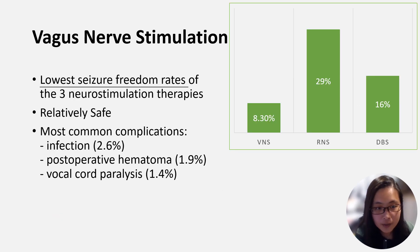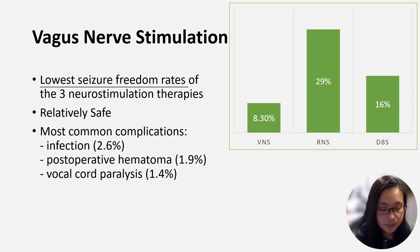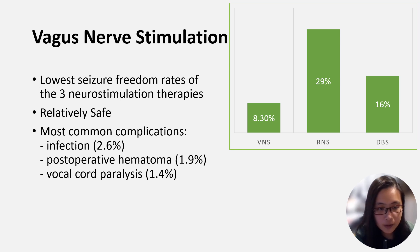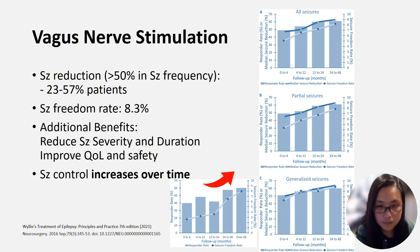Compared to the other two neuromodulation methods, VNS has the lowest seizure freedom rate but with a relatively less invasive approach. VNS is generally safe and well tolerated. The most common surgical complications include infection, postoperative hematoma, and vocal cord paralysis. Although seizure freedom is rare in VNS-implanted patients,